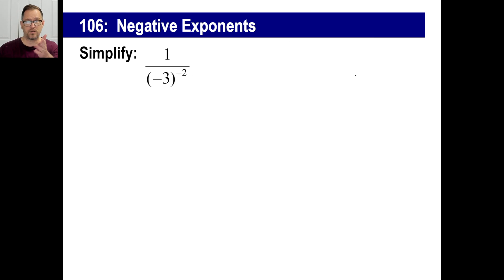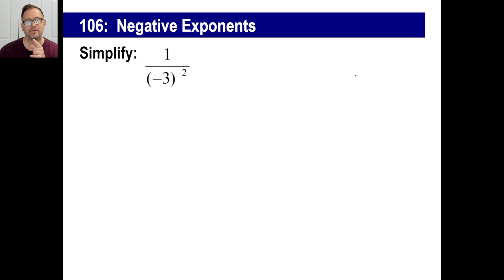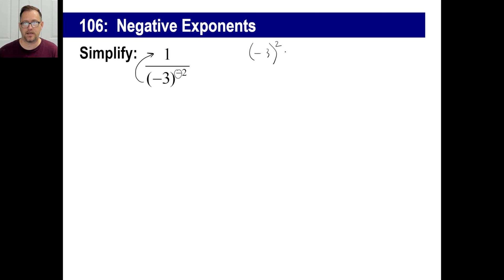Let's try another one — go ahead and pause this, copy it, and do it yourself. Okay, assuming you paused it. We're going to move this up there. Keeping everything exactly the same except the exponent sign. Negative 3 to the second power means negative 3 times negative 3, which is 9. There you go.